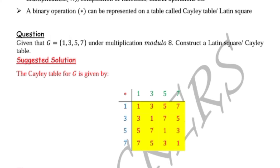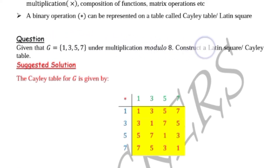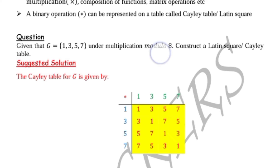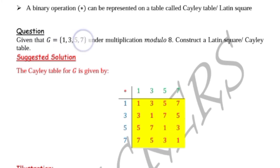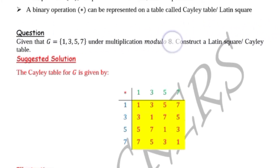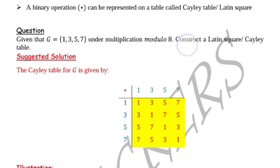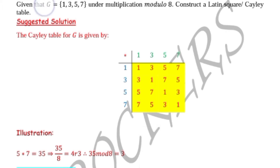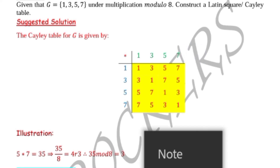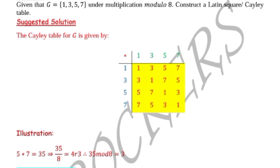Given that G is equal to {1, 3, 5, 7} under multiplication modulo 8, construct a Latin square or Cayley table. When constructing a Cayley table for this binary operation, it is customary to write the elements of our set G as the header row and also write them as the header column.